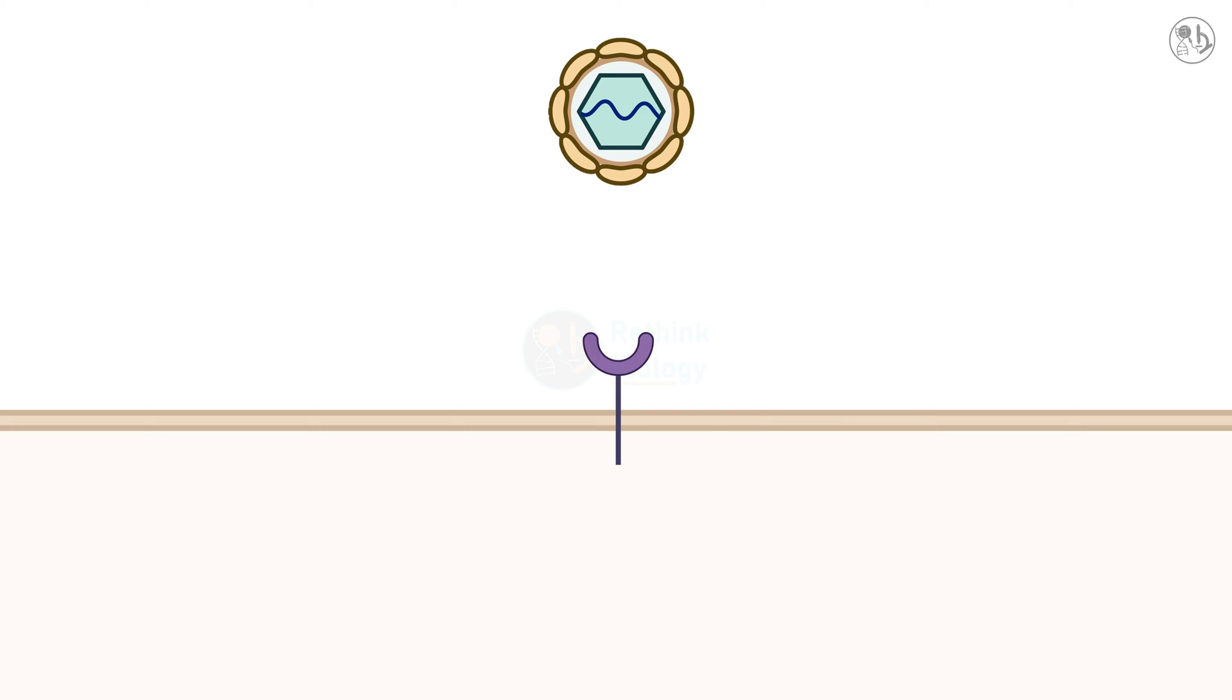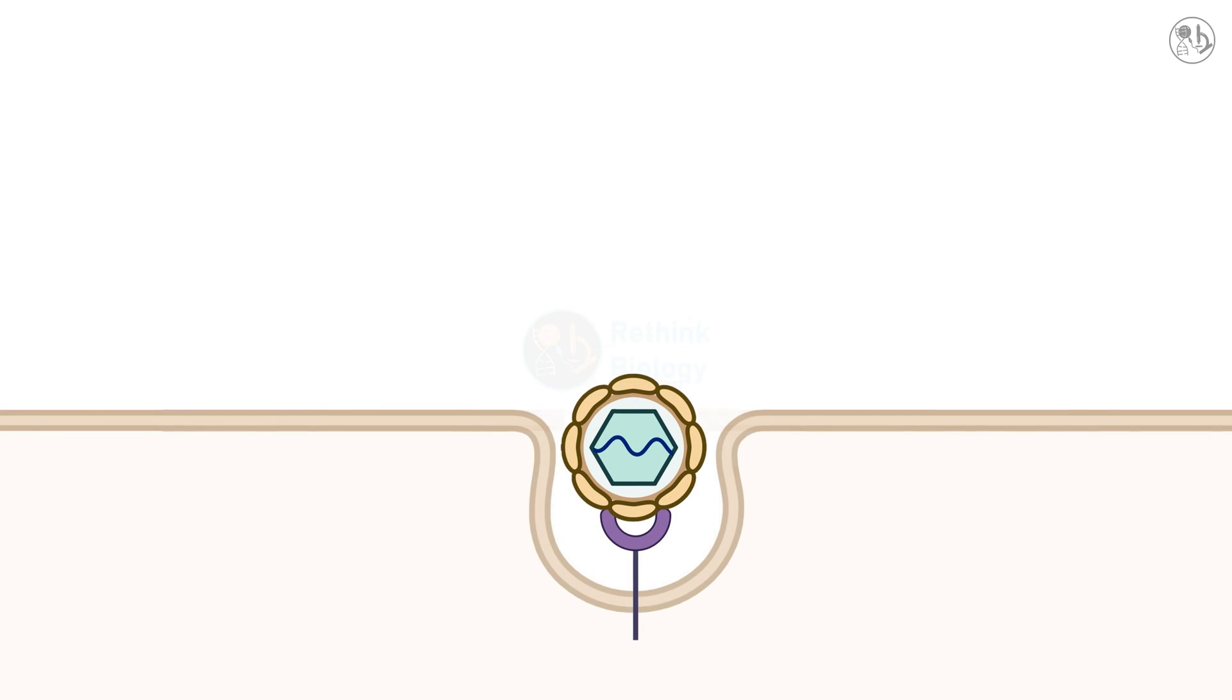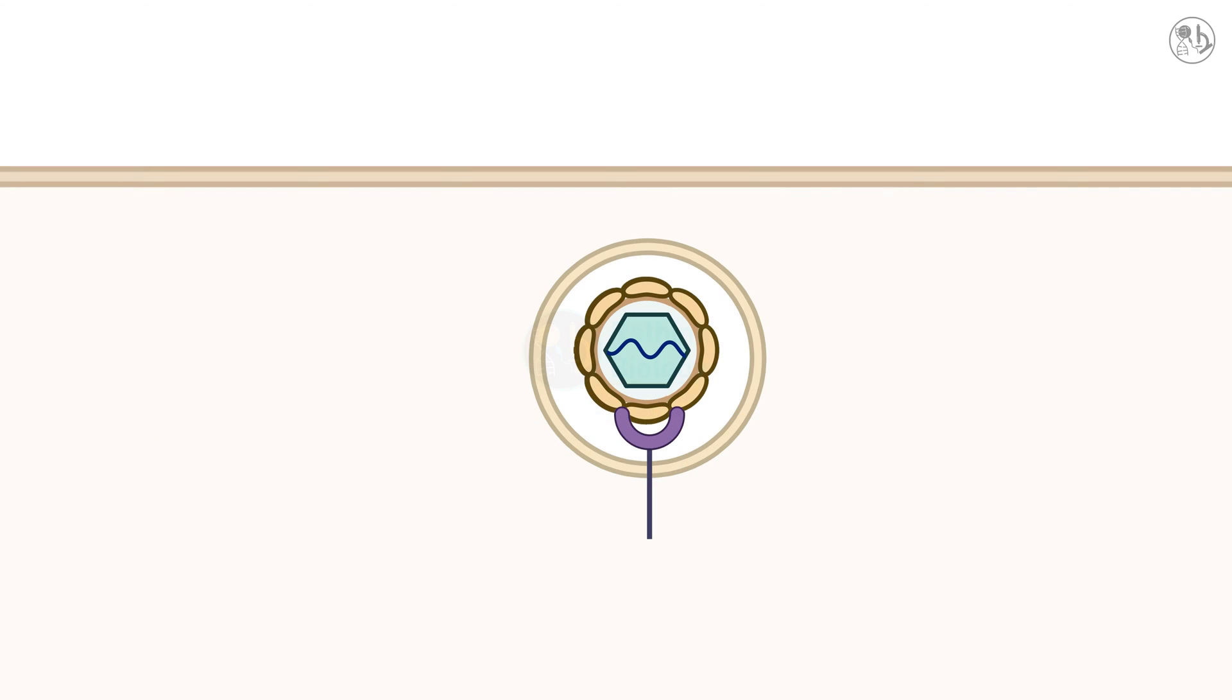The infection begins when the dengue virus attaches to the surface of a human cell using its E protein to bind to specific receptors. The cell then engulfs the virus in a process called endocytosis, forming a vesicle inside the cell.